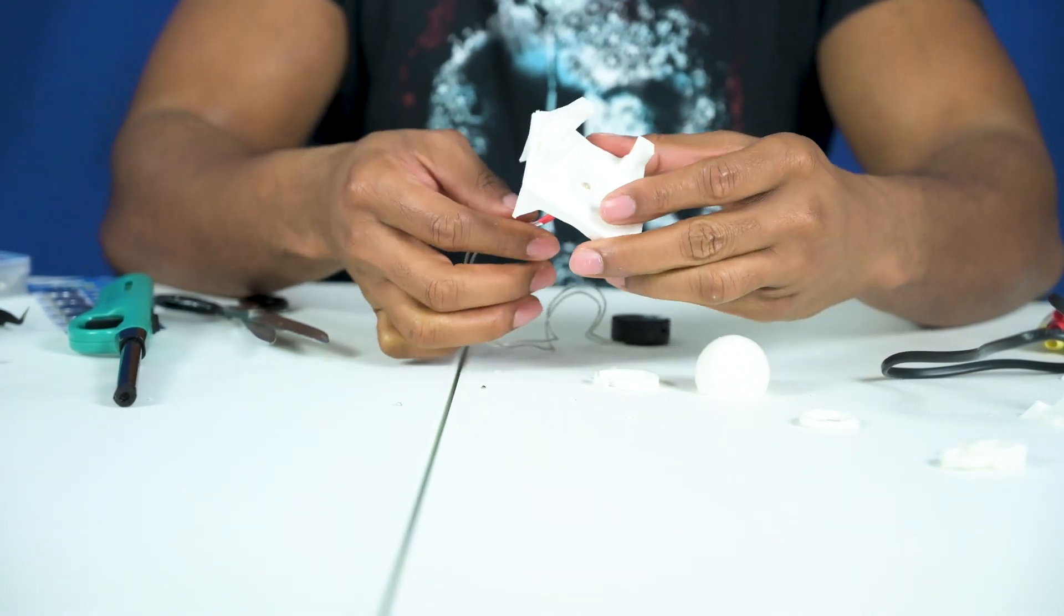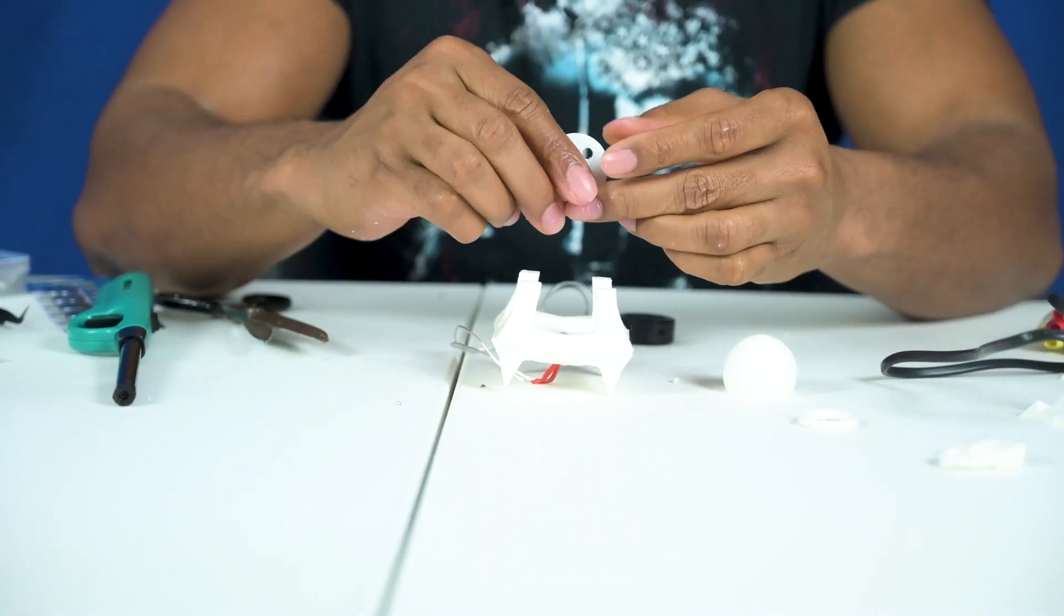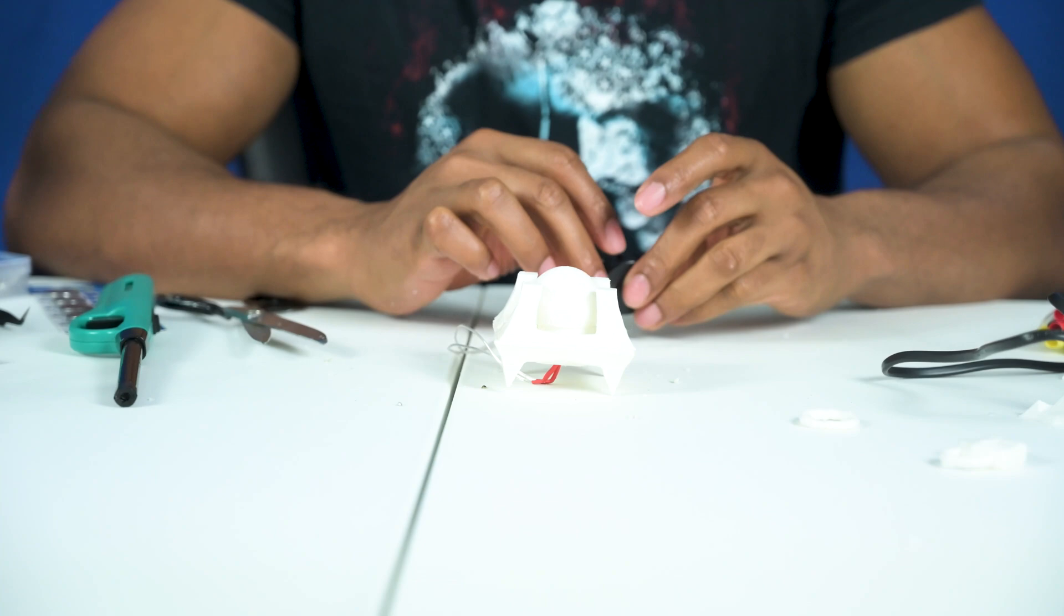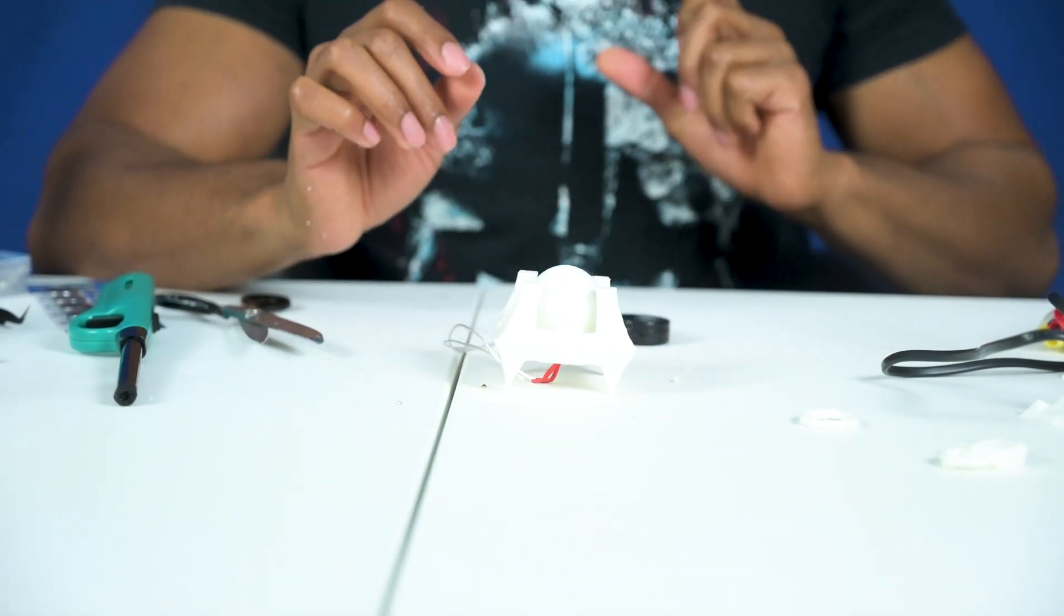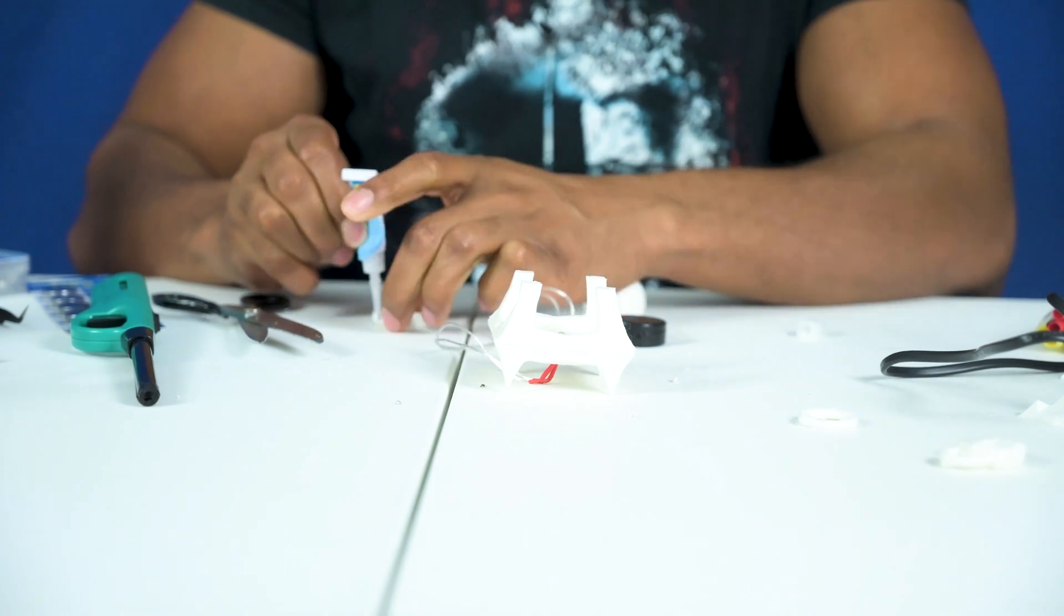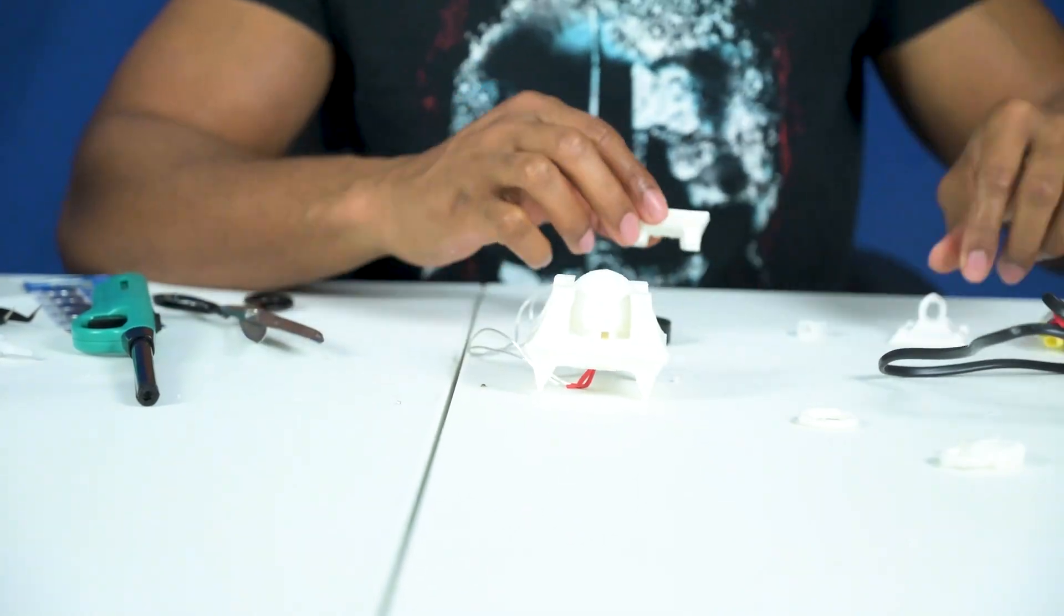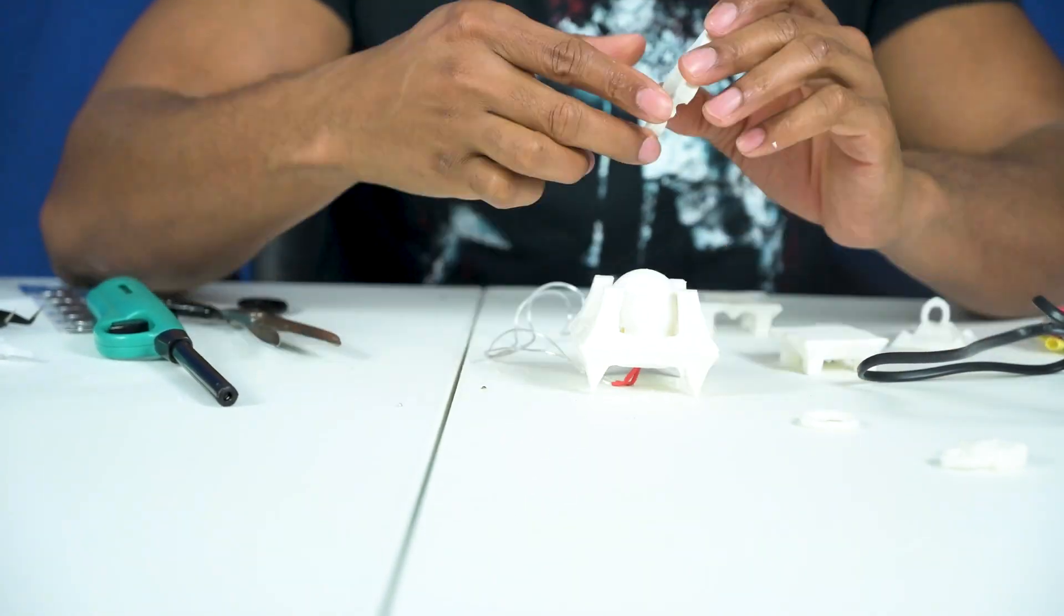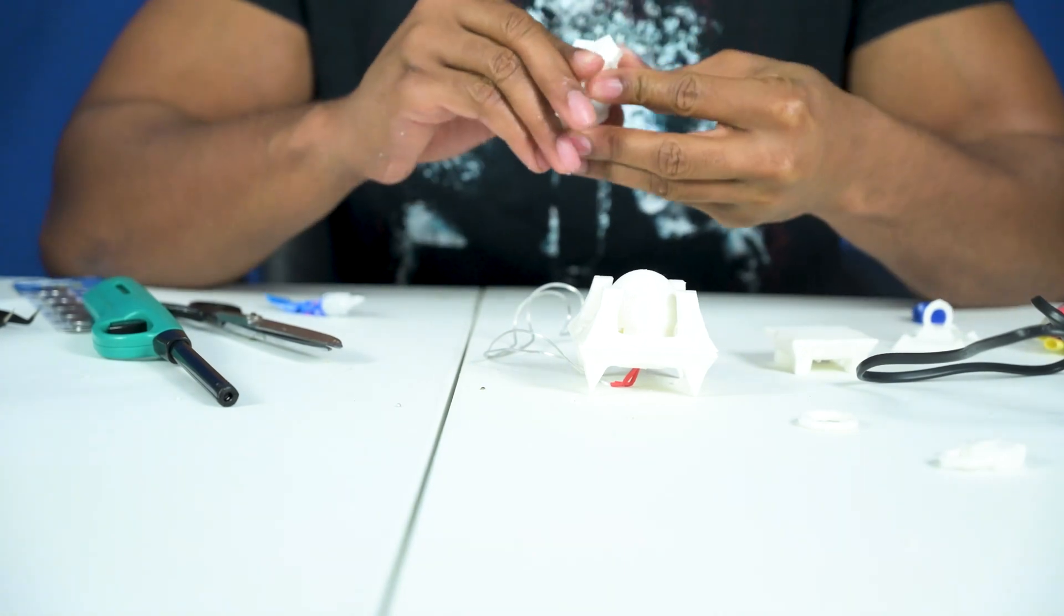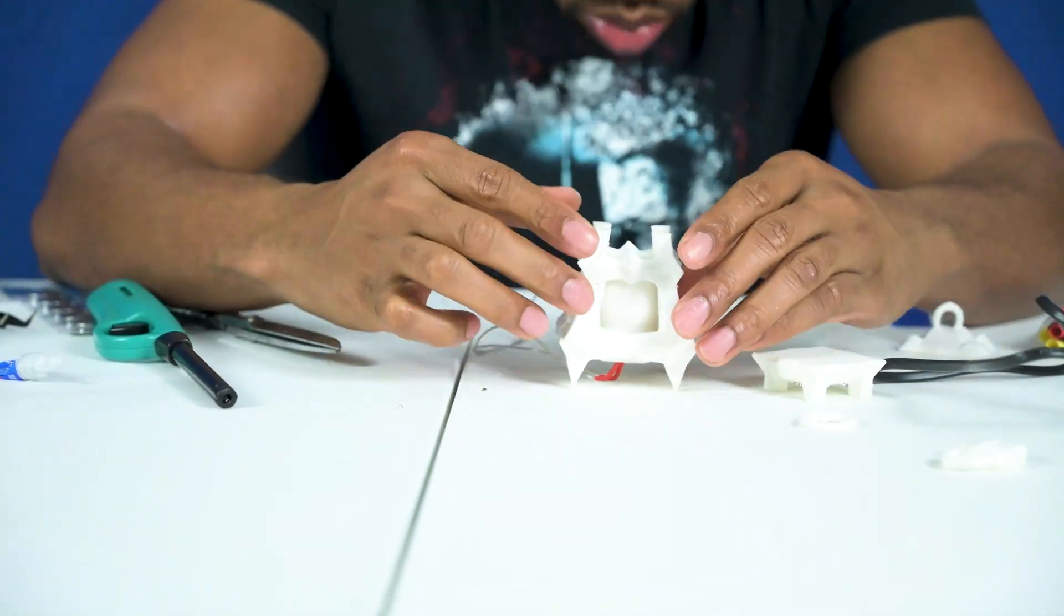I'm going to just bend that over to the side a little bit. And now, put on that piece, put on this piece and let's see how it looks. It's glowing. So, we're going to go ahead and assemble the rest.